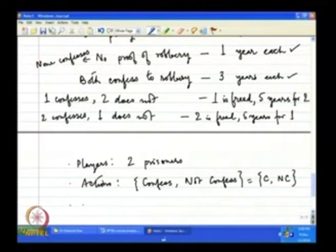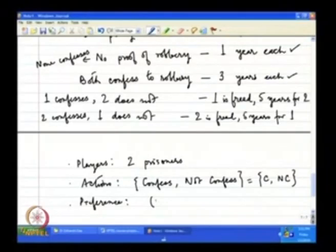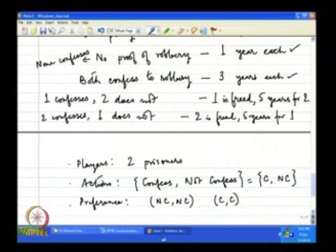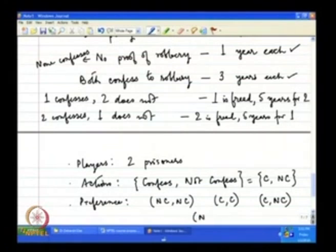Thirdly, we need to know the preference of each prisoner. There are four action profiles: (NC, NC), (C, C), (C, NC), and (NC, C), where the first element is the action of player 1 and the second is the action of player 2. So (NC, C) means the first player is not confessing but the second player is confessing.